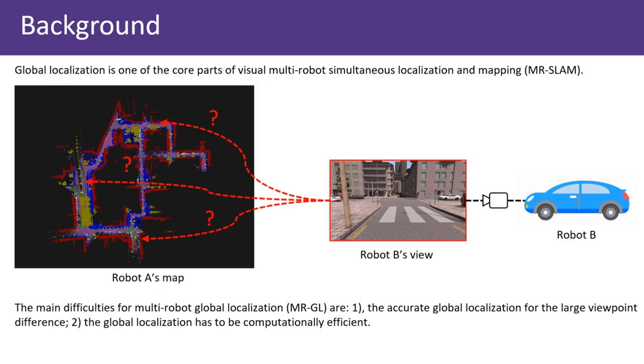Global localization is the problem of determining the position of a robot in a reference frame, and it is also the core problem of visual multi-robot SLAM.